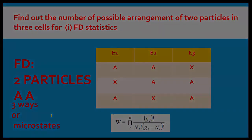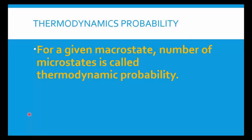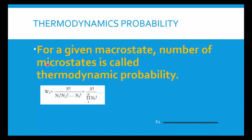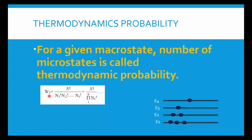Thermodynamic probability is applicable for distinguishable particles, i.e., Maxwell-Boltzmann statistics. For a given macrostate, the macrostate information is fixed — you have a fixed number of particles, fixed number of energy levels, and a fixed distribution of how many particles lie in which levels. The number of microstates can be calculated using thermodynamic probability. The formula is: W = N! / (n1! × n2! × ... × ni!), where N is the total number of particles.